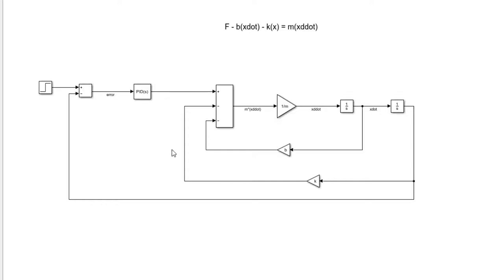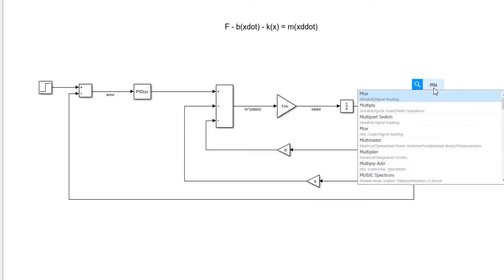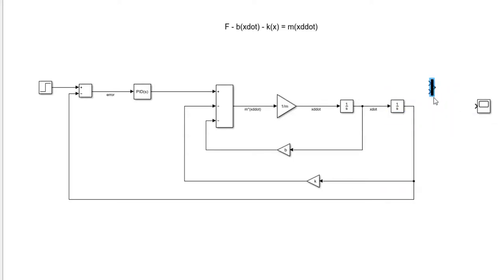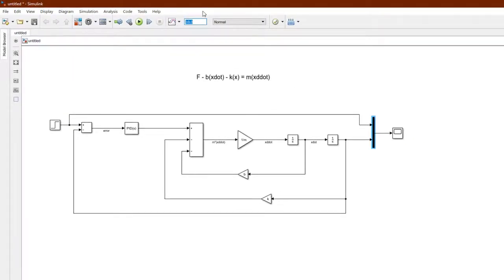This is the first way of modeling. Let's test it. I add a scope to view the reference position and the actual position of the mass. I use a MUX to combine these two signals. I set simulation time to five seconds. Note that mass M, damping B, and spring constant K are defined in a separate file, as are the PID parameters.